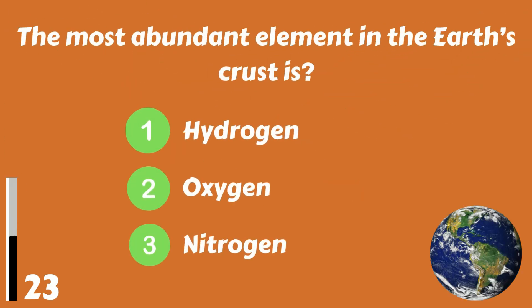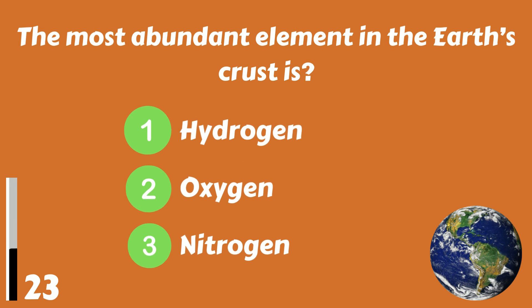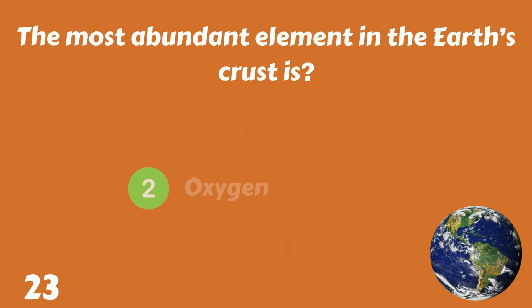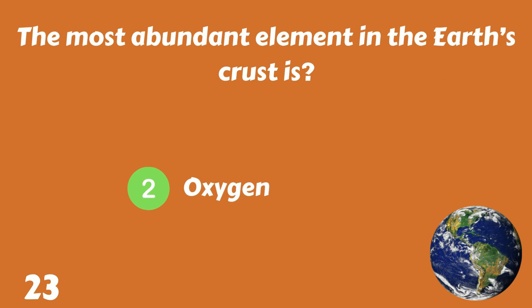The most abundant element in the Earth's crust is hydrogen, oxygen or nitrogen. The answer is oxygen.